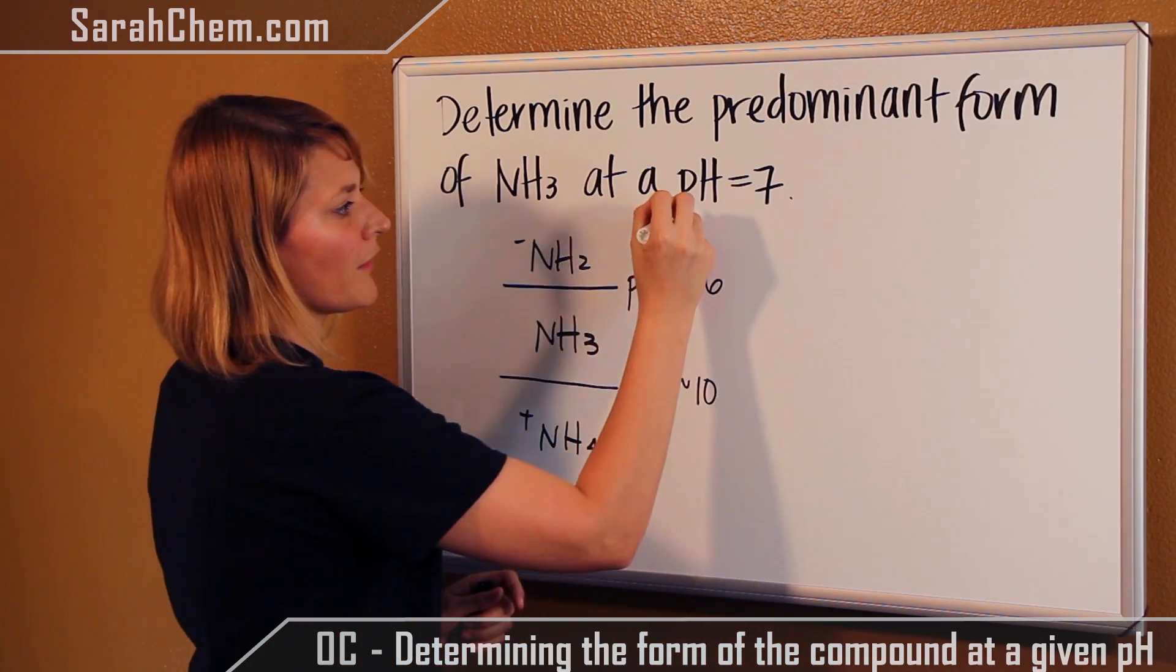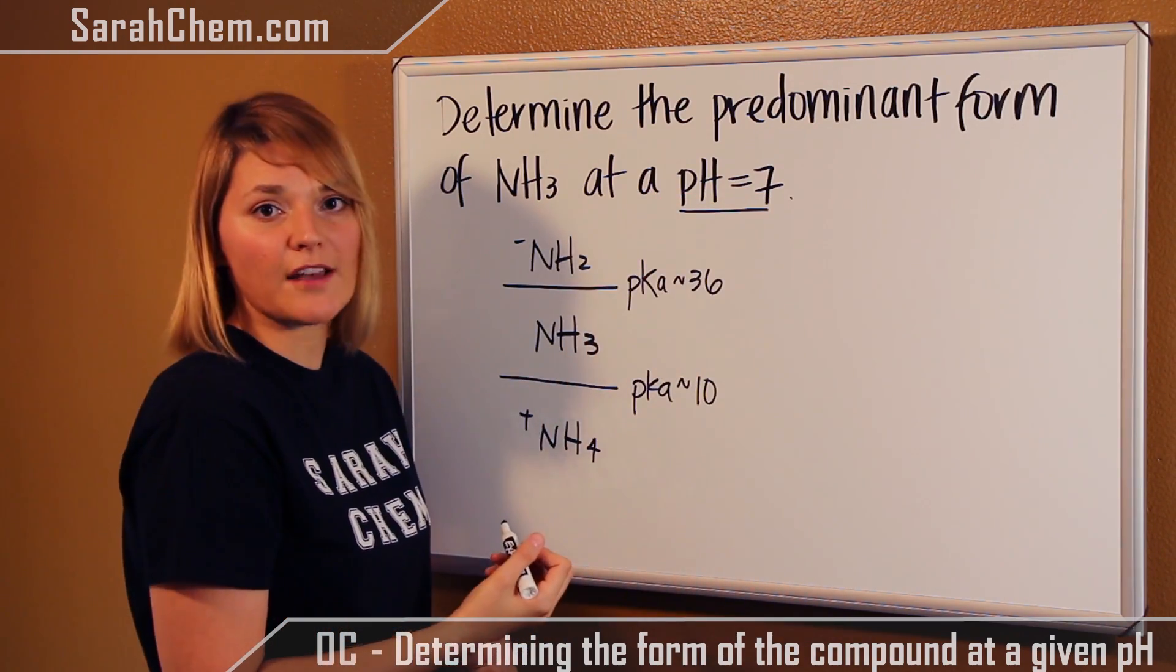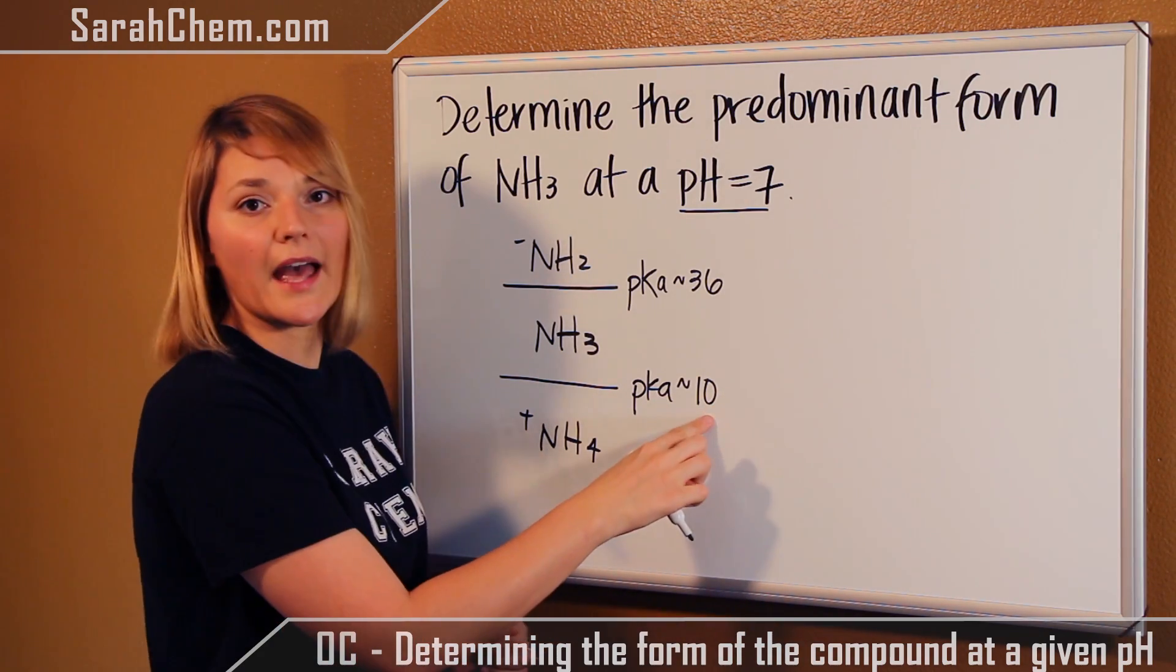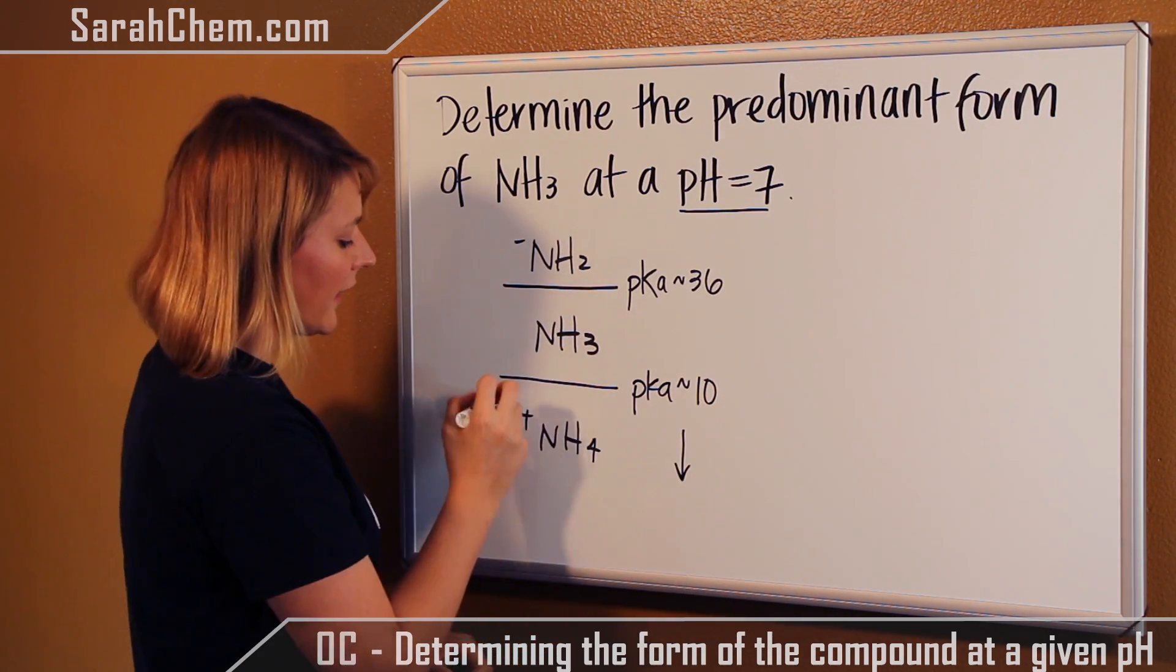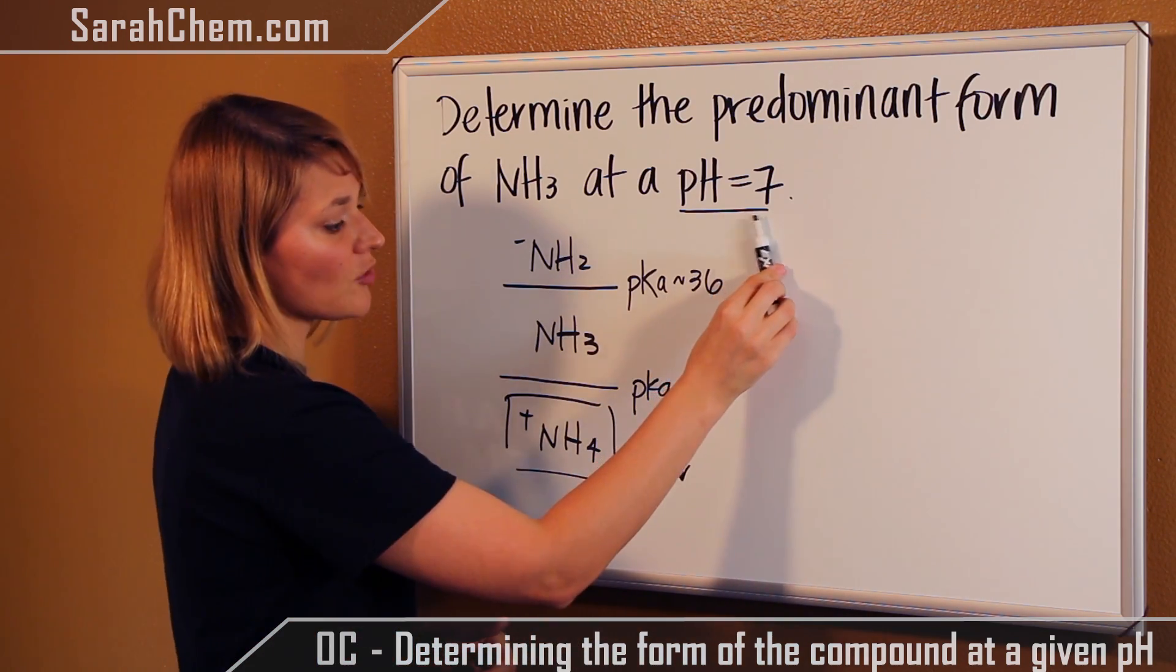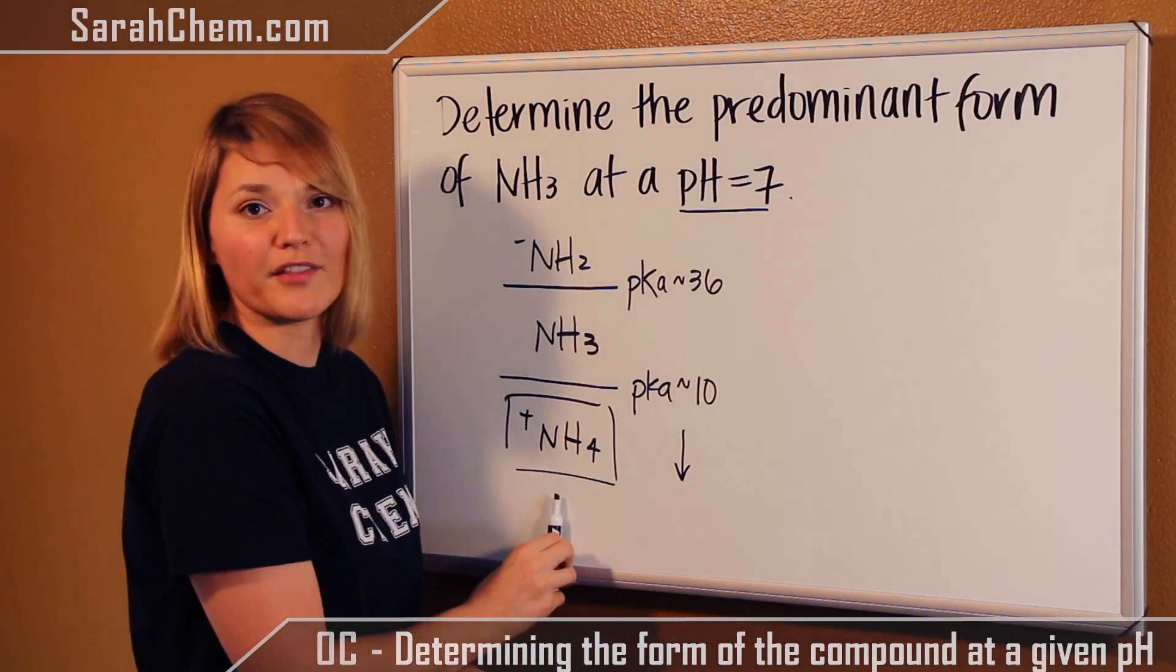So, now we take a look at what we're given. We're told that the pH is 7. So, using this scale, we see that 7 falls below 10. What that tells us, then, is the predominant species would have to be ammonium because this pH is lower than the pKa of this substance.